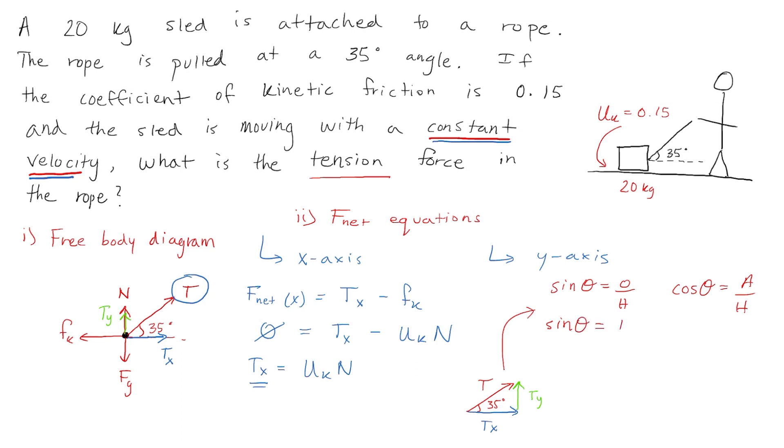Let's start with sine. We know the opposite side is Ty and the hypotenuse is T. If we rearrange this equation and add in our angle, we find that Ty is equal to T sine 35 degrees. We can do the same with the cos. We know the adjacent side is Tx. The hypotenuse is T. And when we rearrange this equation, we find that Tx is equal to T cos 35 degrees.